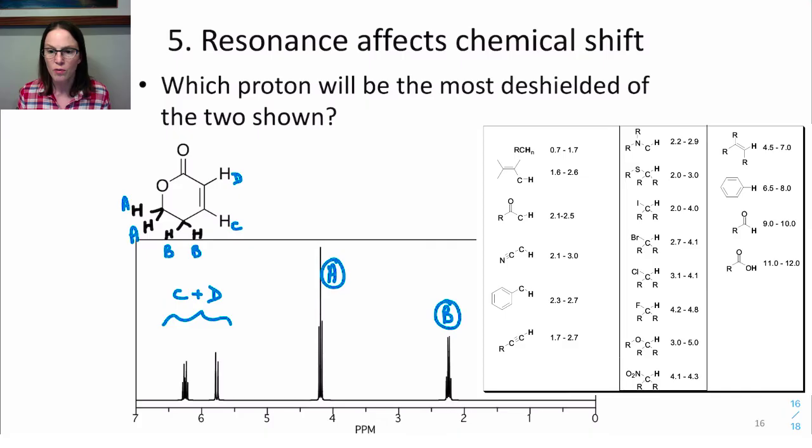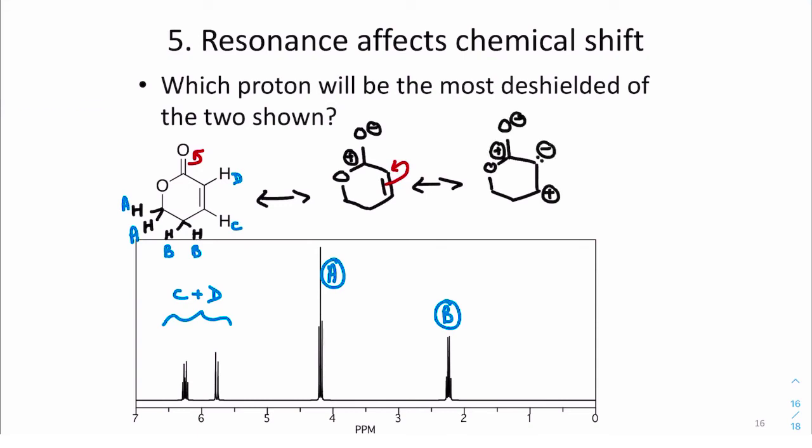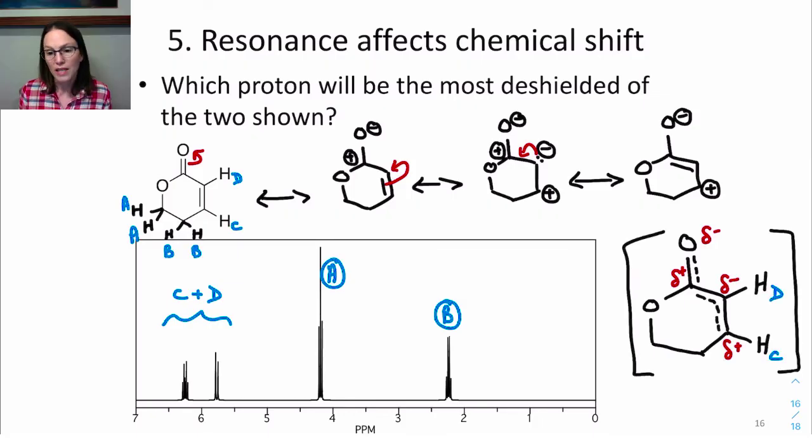So now we need to draw the resonance structures to determine which signal represents which proton of the alkene. So those resonance structures tell us that the hybrid, that better representation, there's a partial positive on the carbon bound to proton C. That means lower electron density at C.